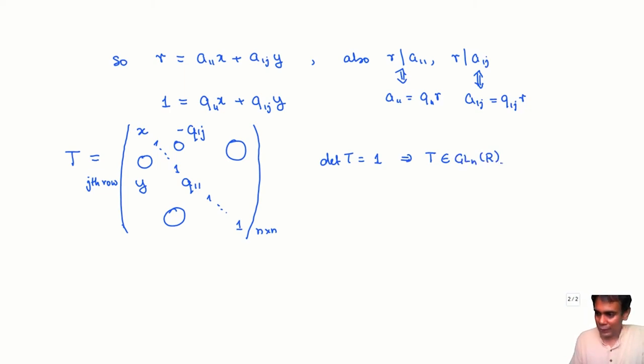Now if you do A goes to, instead of doing a column operation, you take A by AT, then what can you say about the matrix AT? Then the one-one entry of AT?